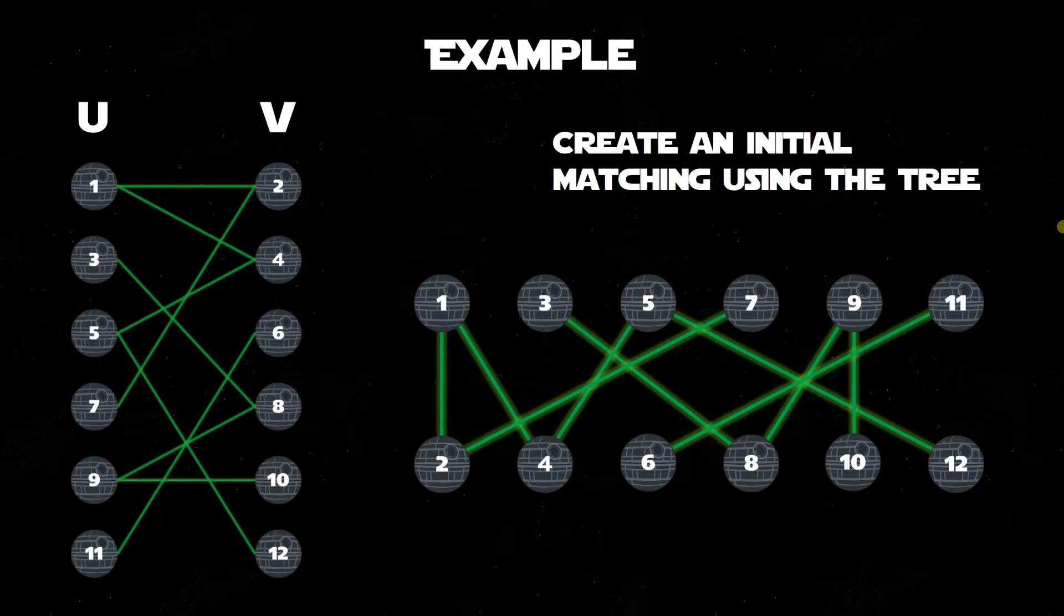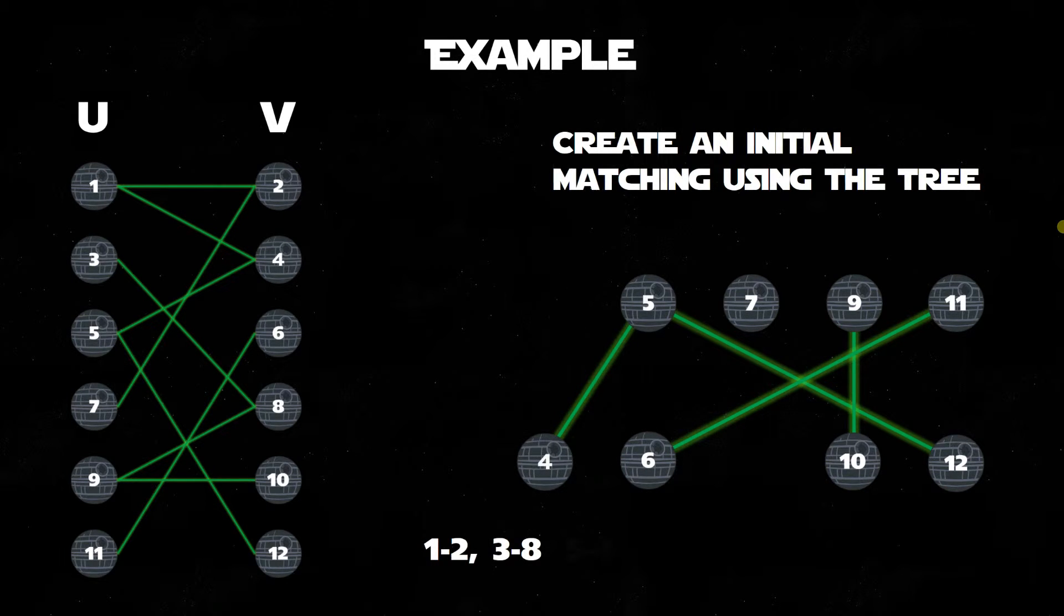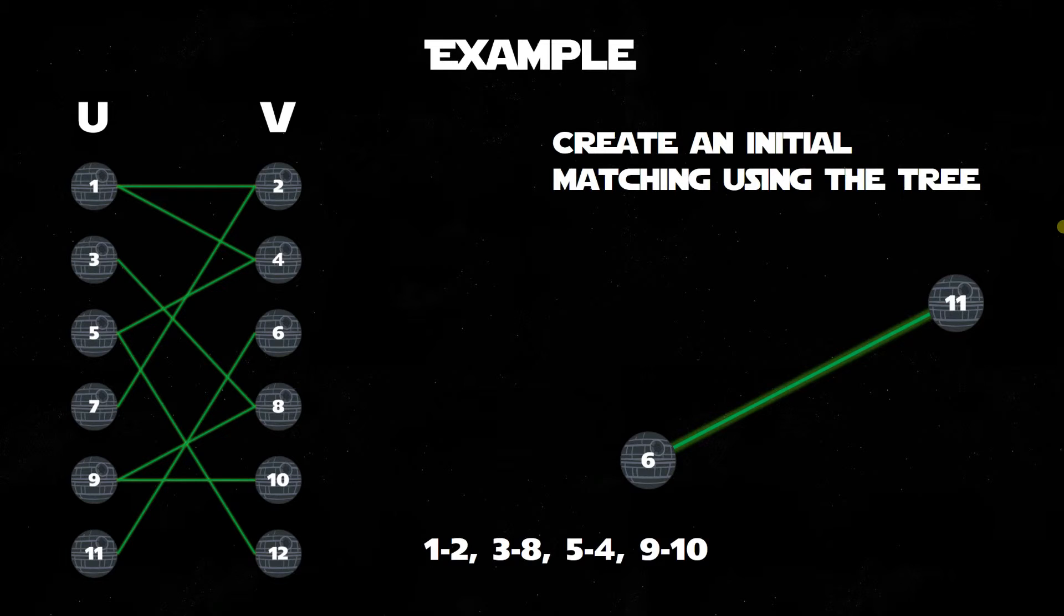Having created this tree, we can now create an initial matching using depth-first search, starting again with the first vertex, 1, which we remove with 2, along with any edges connected to them. Continuing along this, we end up with 2 and 12 having been orphaned, similar to Anakin Skywalker in episode 2. Spoiler alert! These vertices are then removed, as we have no longer need for them in this initial matching. We continue until no vertices are left.